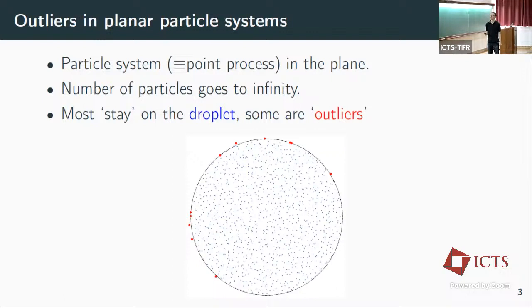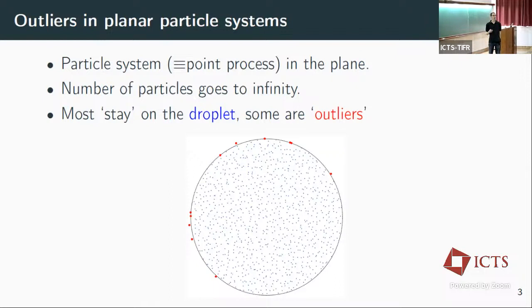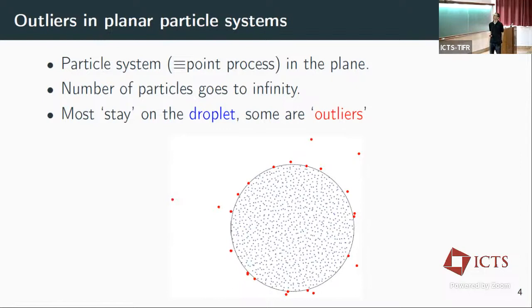The typical systems are related to random matrices. For example, if we take a random matrix with independent complex Gaussians, then the eigenvalues will satisfy the circular law. The eigenvalues will form a disc in the limit — all of them will be inside this disc and there will be a few outliers. But we are interested in particle systems where you have many outliers; the picture looks something like this, with outliers quite far from the main region, which is called the droplet.